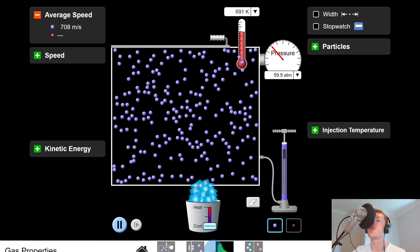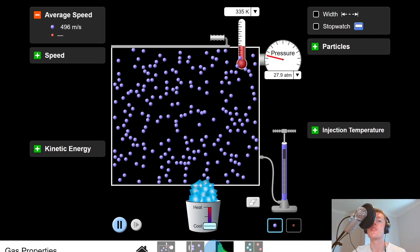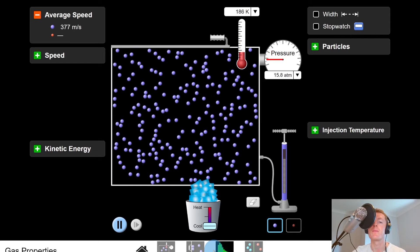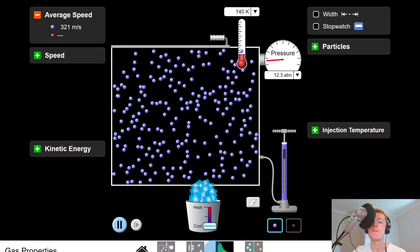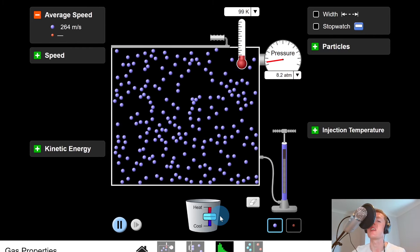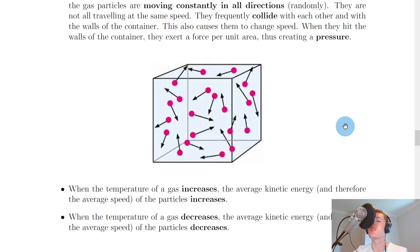If I now cool down the gas, then we can see that the particles should slow down and their average speed should get much lower. So this means that the kinetic energy of the particles has decreased because they're no longer moving as much as they were before.